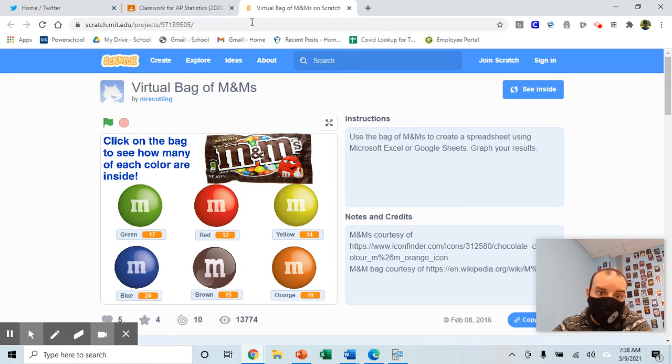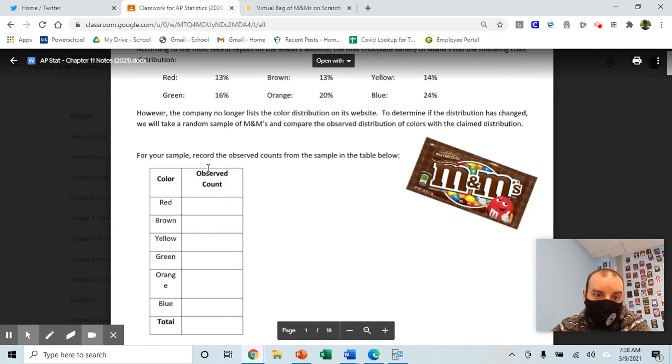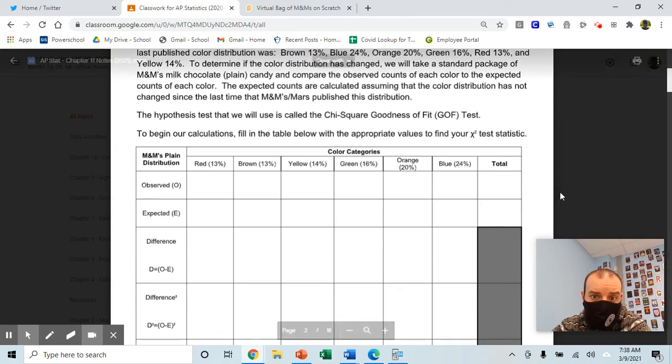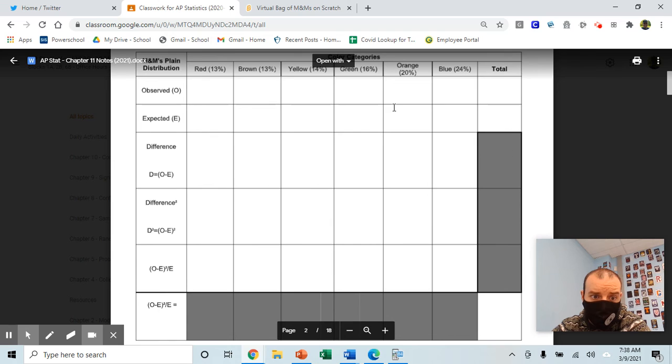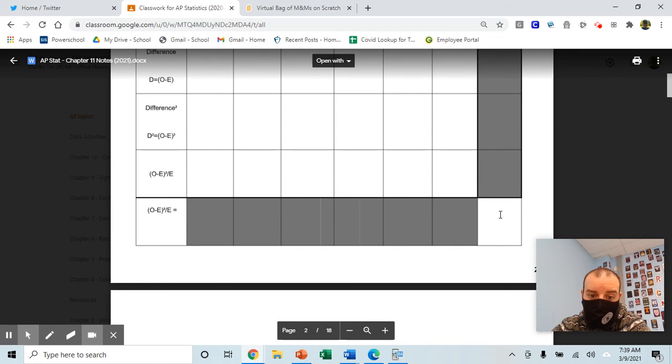All right, so just to recap here, first thing you're going to do: go to the website here, get your virtual bag of M&Ms, fill out the observed counts, complete the table in here. That will get you your chi-squared test statistic by hand.